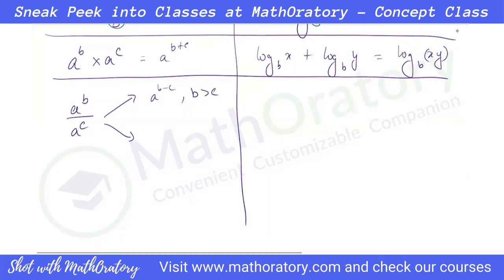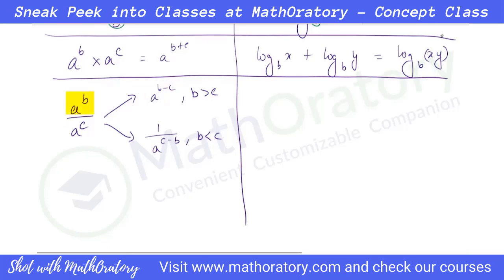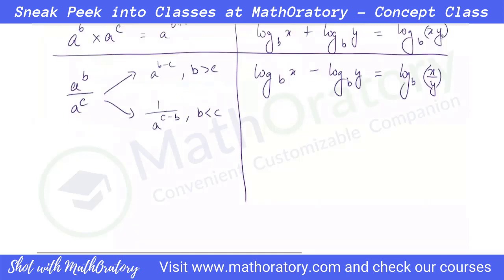Similarly, if b is less than c, something will be left in the denominator — c minus b. This tells us two things. First, if you're dividing the numbers, the powers are getting subtracted. So if we subtract the powers, the numbers should get divided. Second, both cases — b minus c in numerator or c minus b in denominator — are equal to the same expression a to the power b divided by a to the power c.